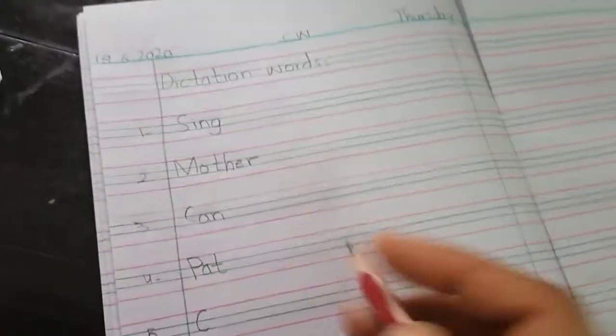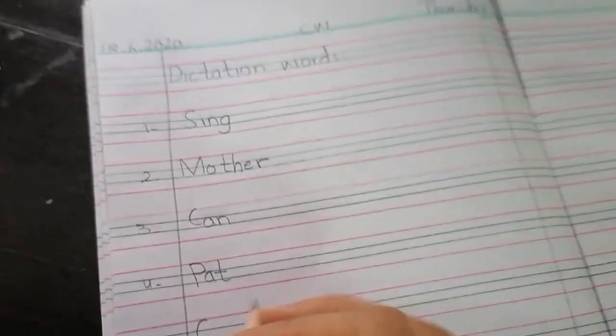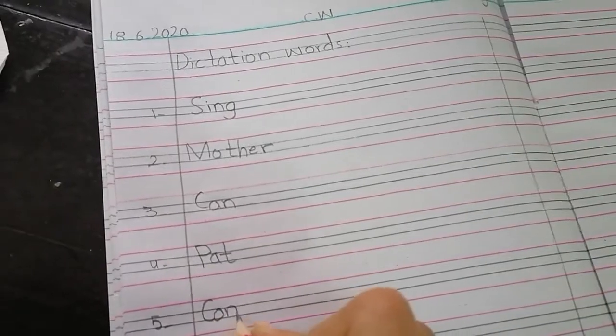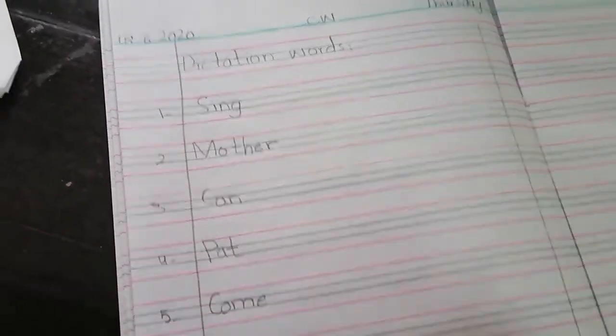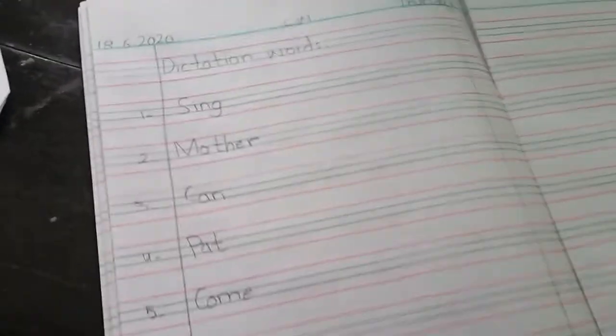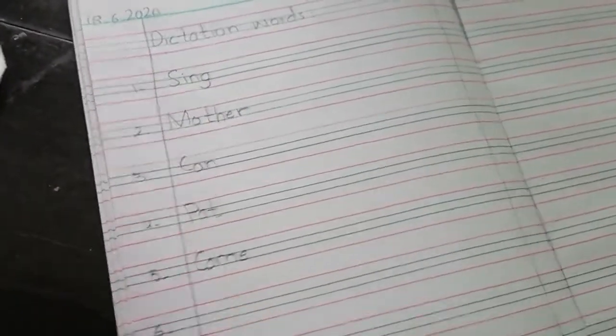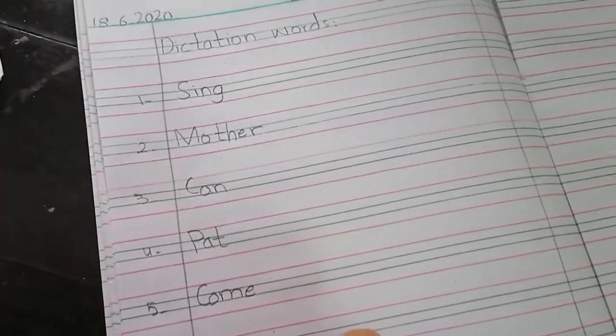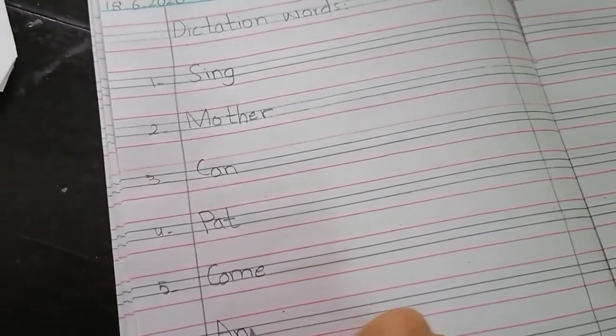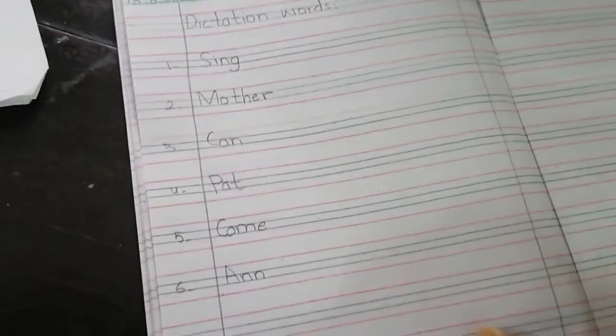The fifth one is come, C-O-M-E, come. Please come here. Ann, A-double N, Ann is the name of girl.